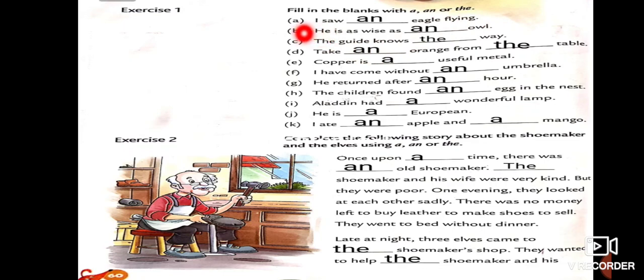So, see here. A. I saw an eagle flying. Here, you can see. O, L is there. E. Next. He is as wise as an owl. Next. The guide knows the way. Next. Take an orange from the table. Copper is a useful metal. Why here A article? Because, useful. Here, you can see Y sound is there. And Y is consonant. That's why we have used here article A.